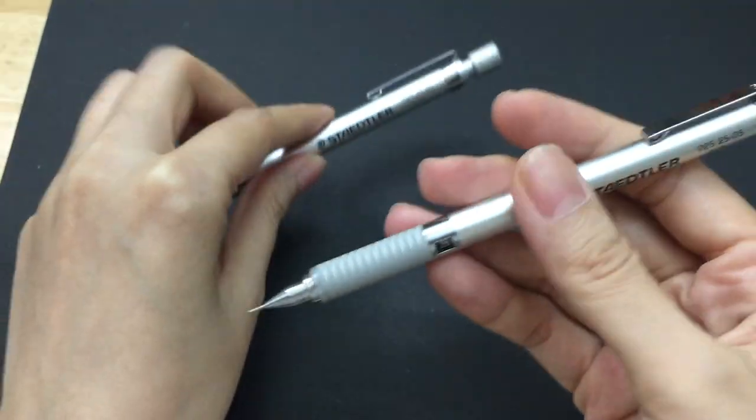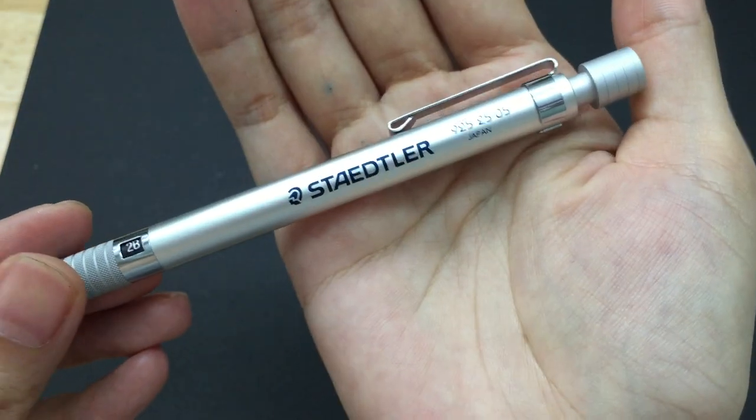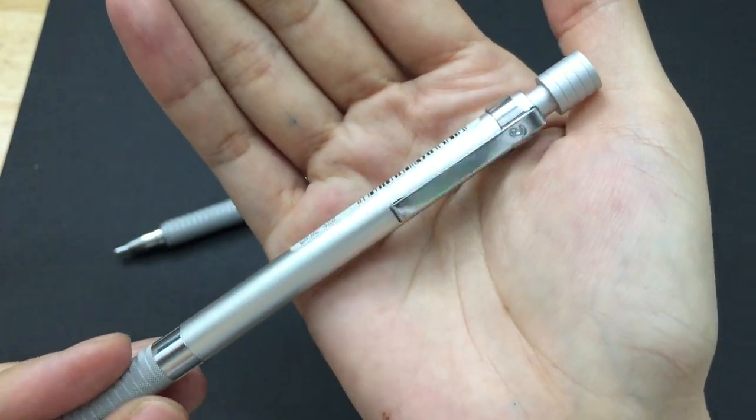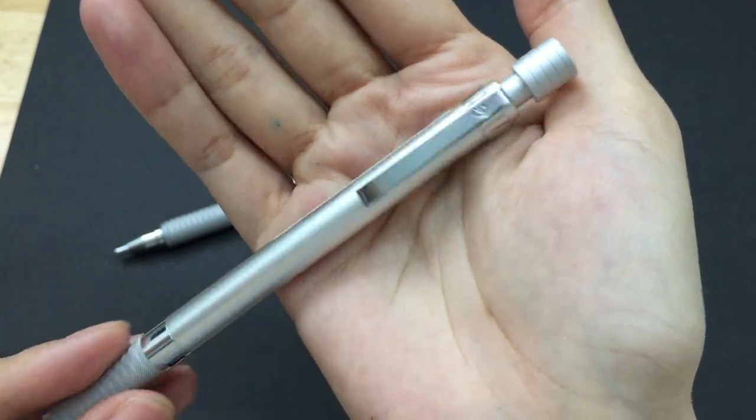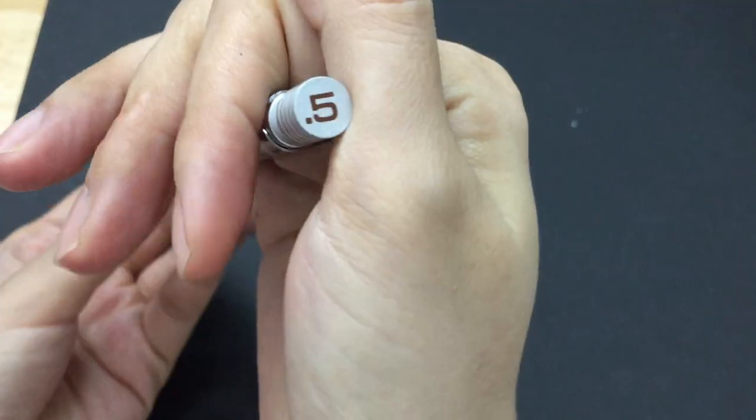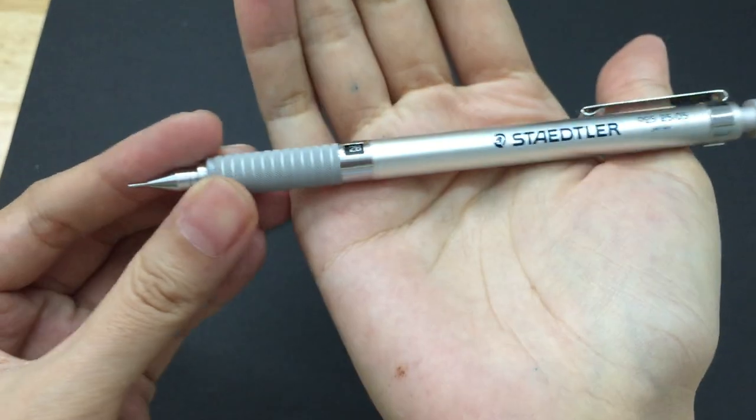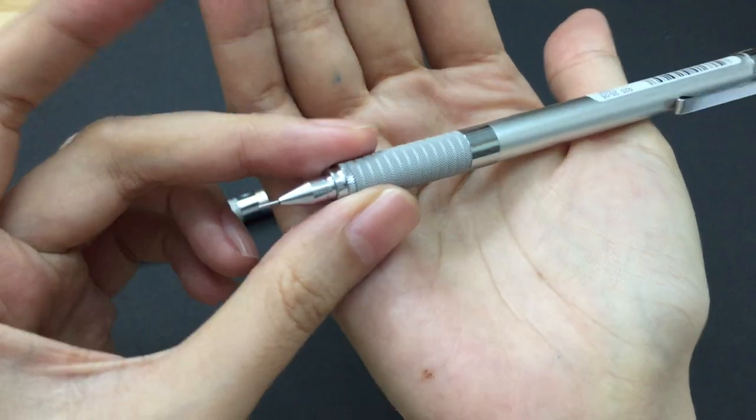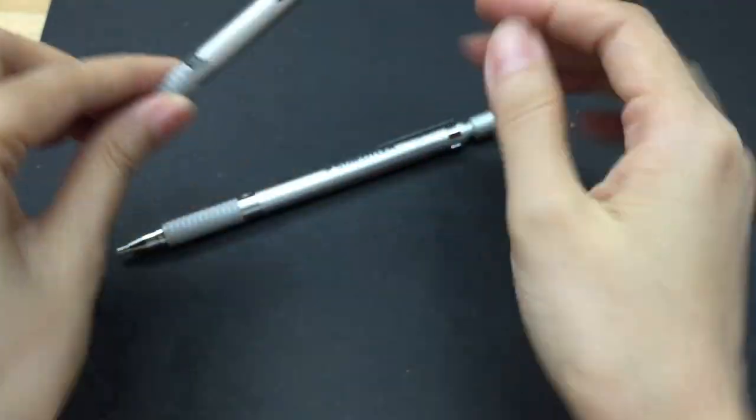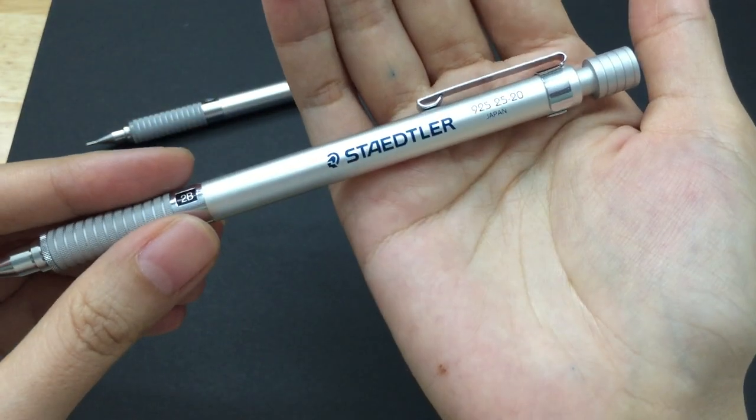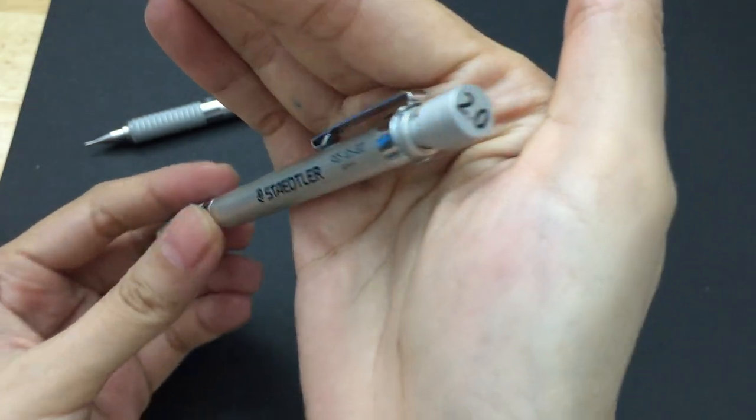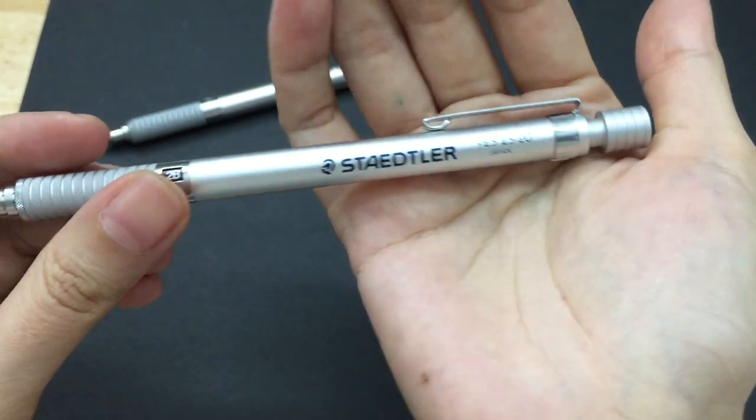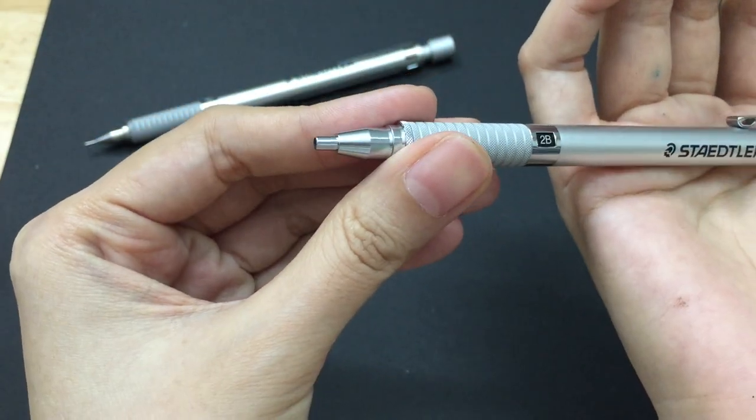Let's have a look at this gorgeous silver aluminum pencil. I got here 0.5 millimeter, and here I have also very interesting 2 millimeter mechanical pencil.